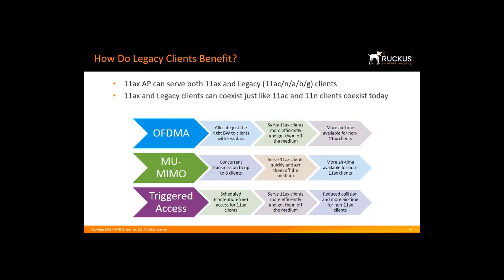Second, 11ax and legacy clients can coexist just like 11ac and 11n clients today. Third, both 11ax and non-11ax clients benefit. 11ax clients will be more efficient and free up more spectrum for 11ac clients. This is like the carpool lane — the first two lanes are for 11ax devices. Let's say 50% of devices are 11ac and 50% are 11ax. I put all the 11ax devices in the carpool lane, which makes them work more efficiently, and the remaining 11ac clients benefit because I took half the cars from all the lanes, freeing up contention for 11ac devices.